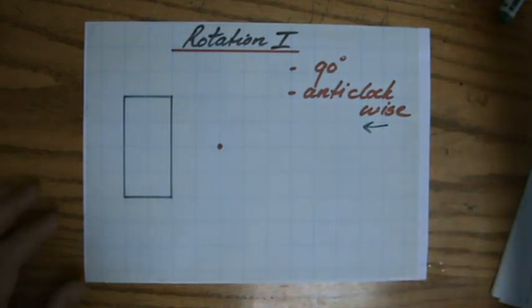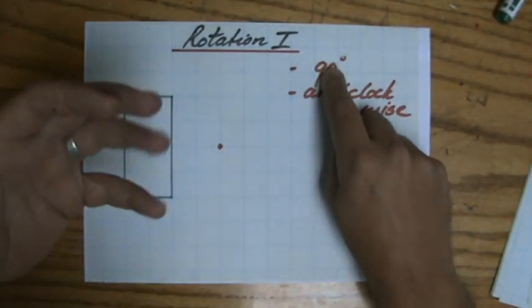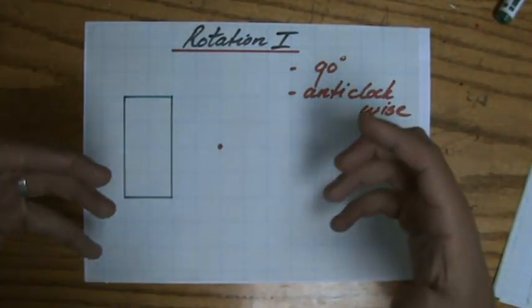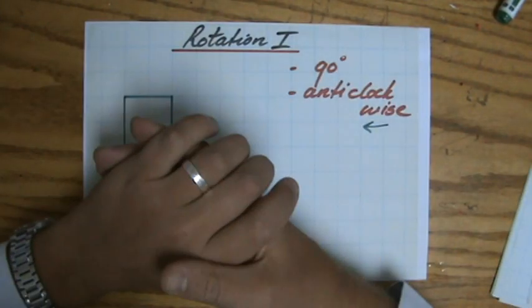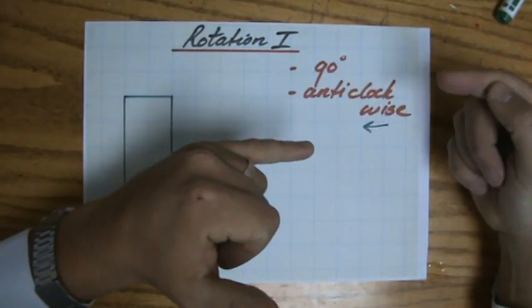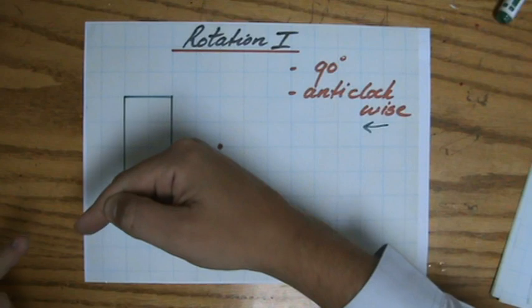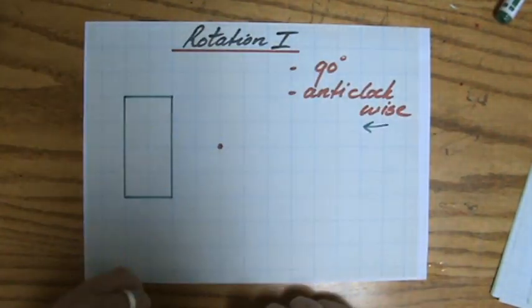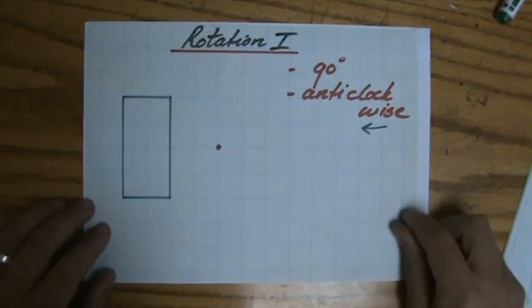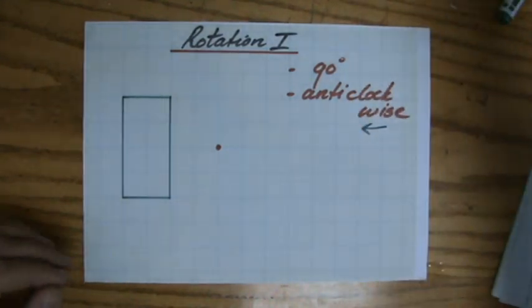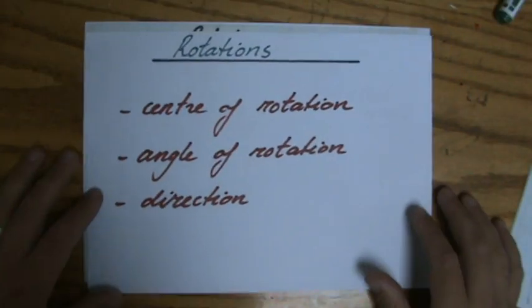With rotations, as you can see here, the question says a 90 degree rotation anticlockwise. Make sure you understand that anticlockwise is in that direction and clockwise would be in that direction, and it gives me some sort of center. Because for all rotations, you're going to get three pieces of information.